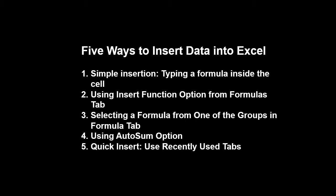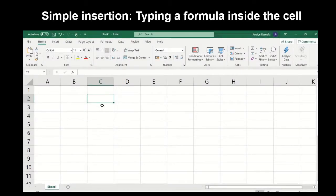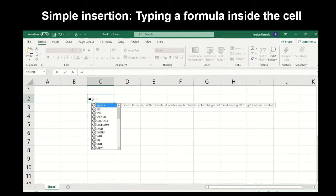So this is our number one step, the simple insertion, or simply typing the formula or function inside the cell bar or cell box. What will we do when we have formulas or functions? It always starts with the equal sign, so we will type equal sign first and then we will type manually the function that we will use, like SUM or other functions that we will use.